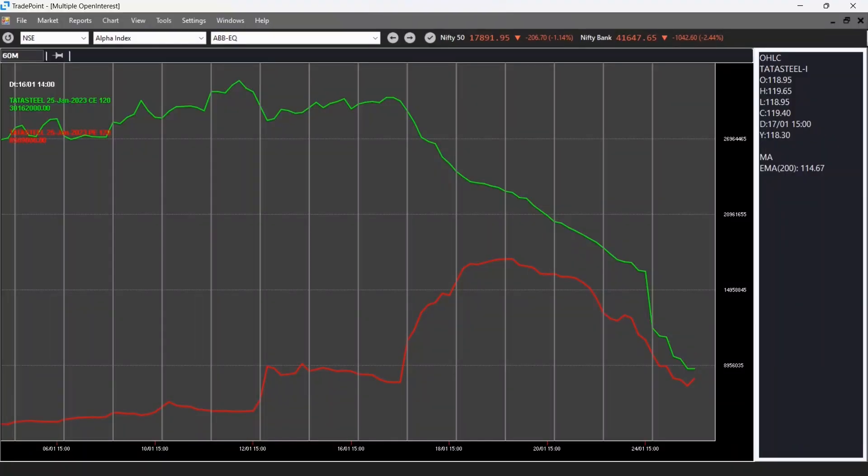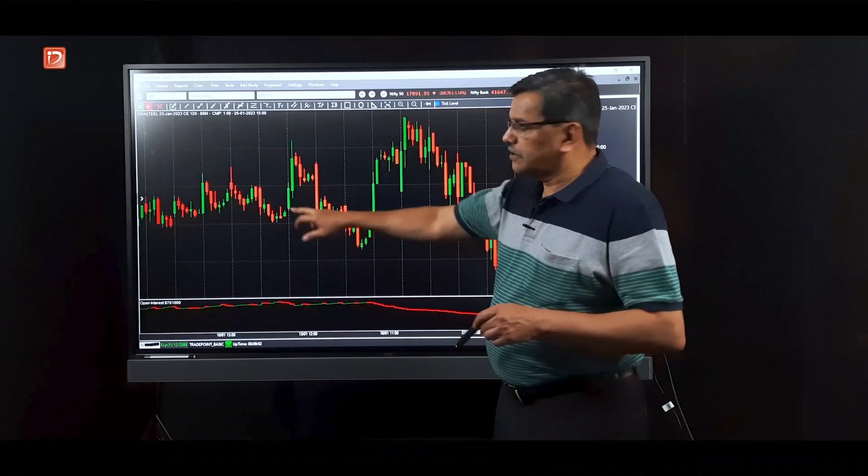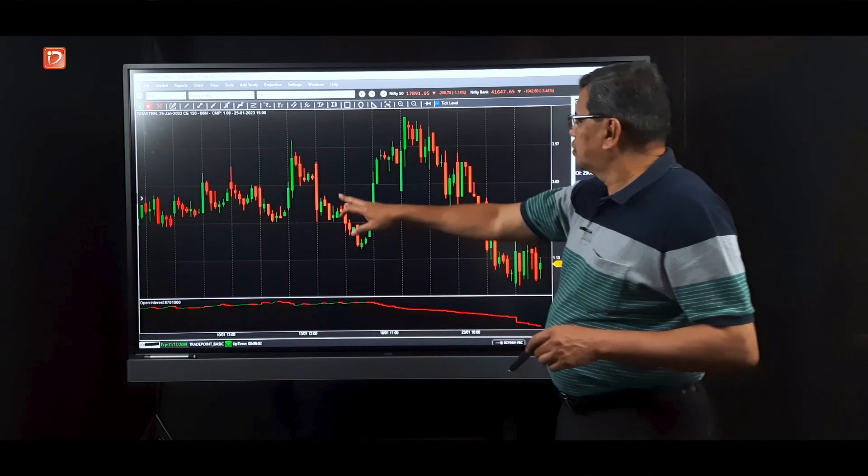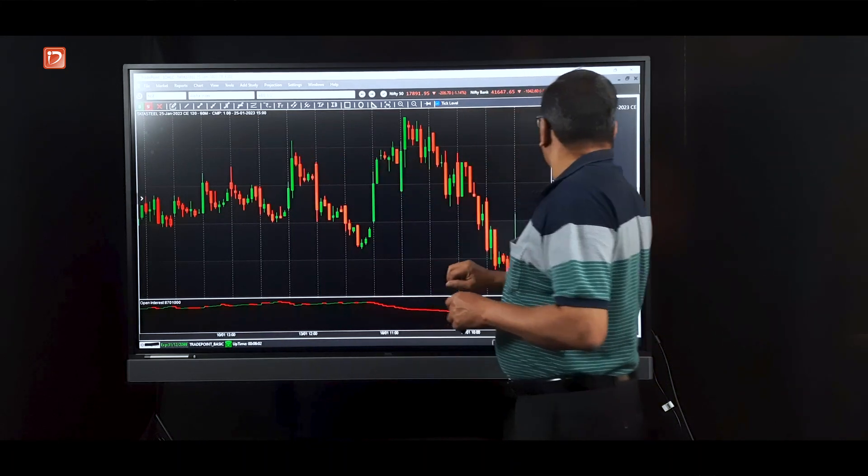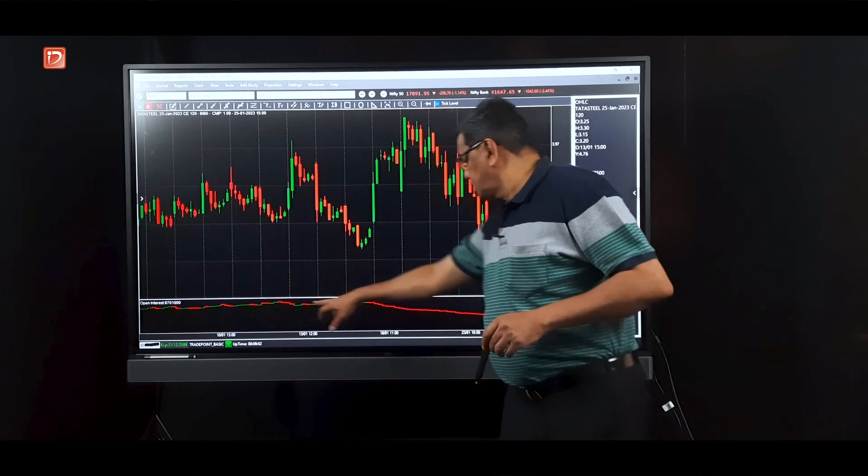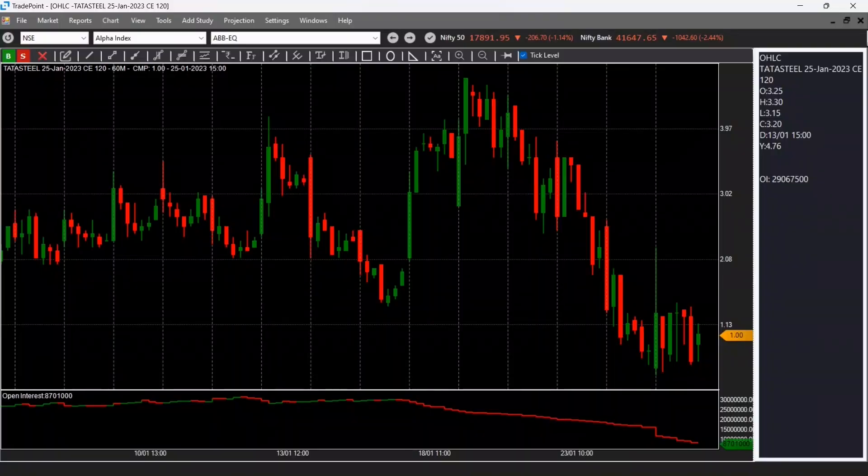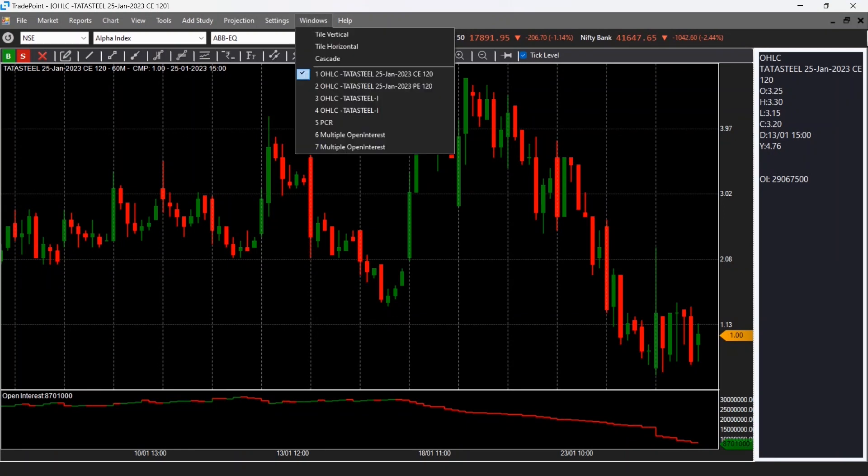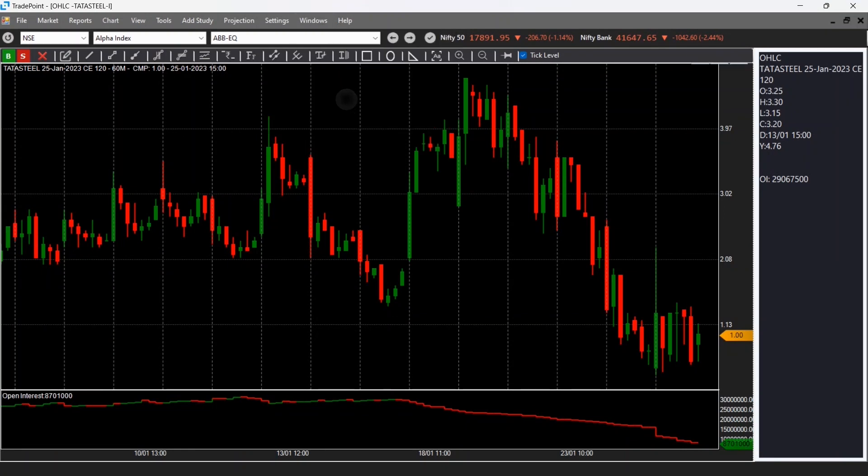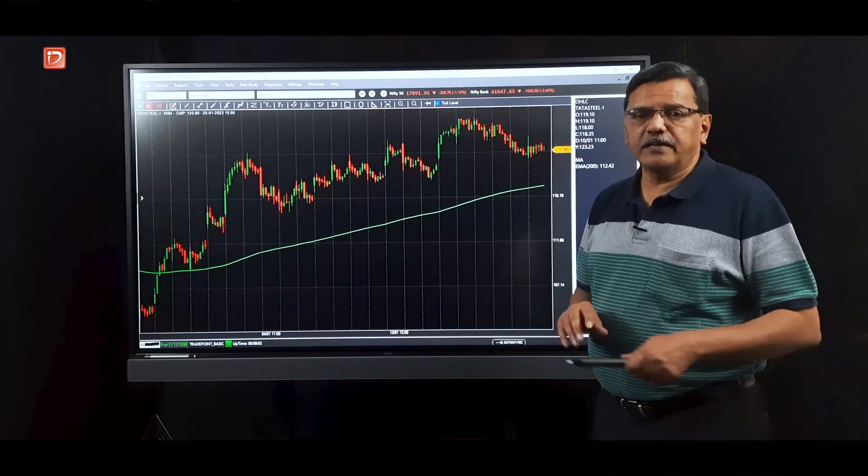But what it means is it is not going to cross 120 easily. That is because the resistance of call writers is huge and that is the open interest there. Now what happens next? So let's look at the chart of the 120 call. So this call went from about 2 to over here on 2nd January, which was about 4, and that's all. Now look at the open interest. This was constant at the higher levels and it did not change.